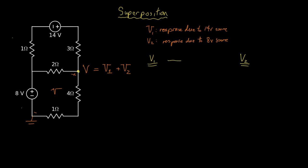So let me redraw the circuit. I'll leave everything alone, except that the 8 volt source we turned off, so its voltage will be set to zero, which means that it becomes a short circuit or a wire. And in this circuit, that voltage is V1.